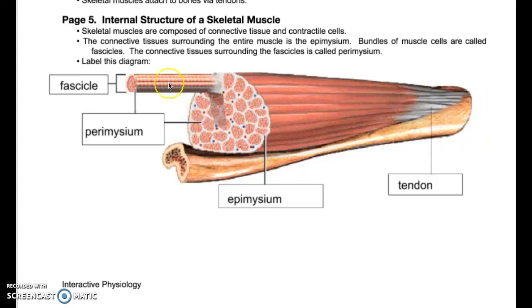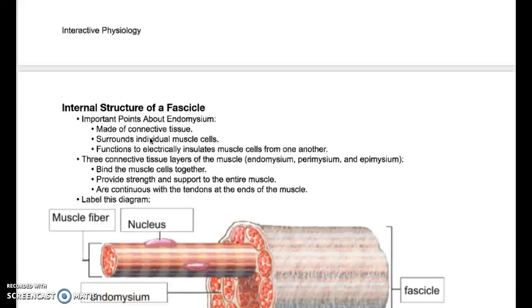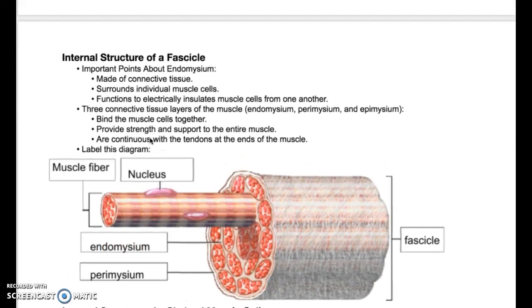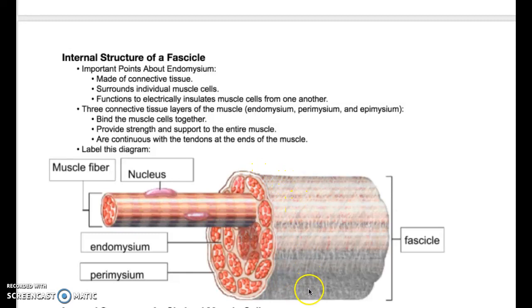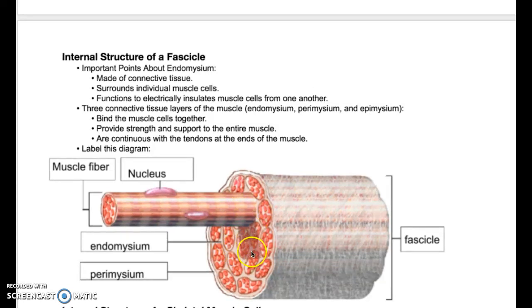Now we're going to talk about the structure of a fascicle. A fascicle is a bundle of many muscle fibers or muscle cells. Here's the perimysium — the connective tissue that surrounds the fascicle. And then surrounding each of these muscle fibers is endomysium, the connective tissue that surrounds the individual muscle cells.